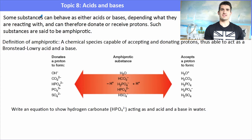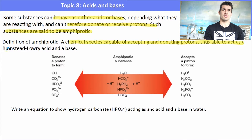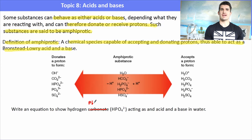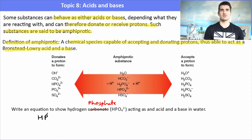Some substances sit on the fence — they can act as either acids or bases depending on their environment. We say these are amphiprotic. An amphiprotic species is a chemical species capable of both accepting and donating protons, thus being able to act as an acid or a base. When asked to show how something like hydrogen phosphate acts as an acid or a base with water, we write two separate equations.